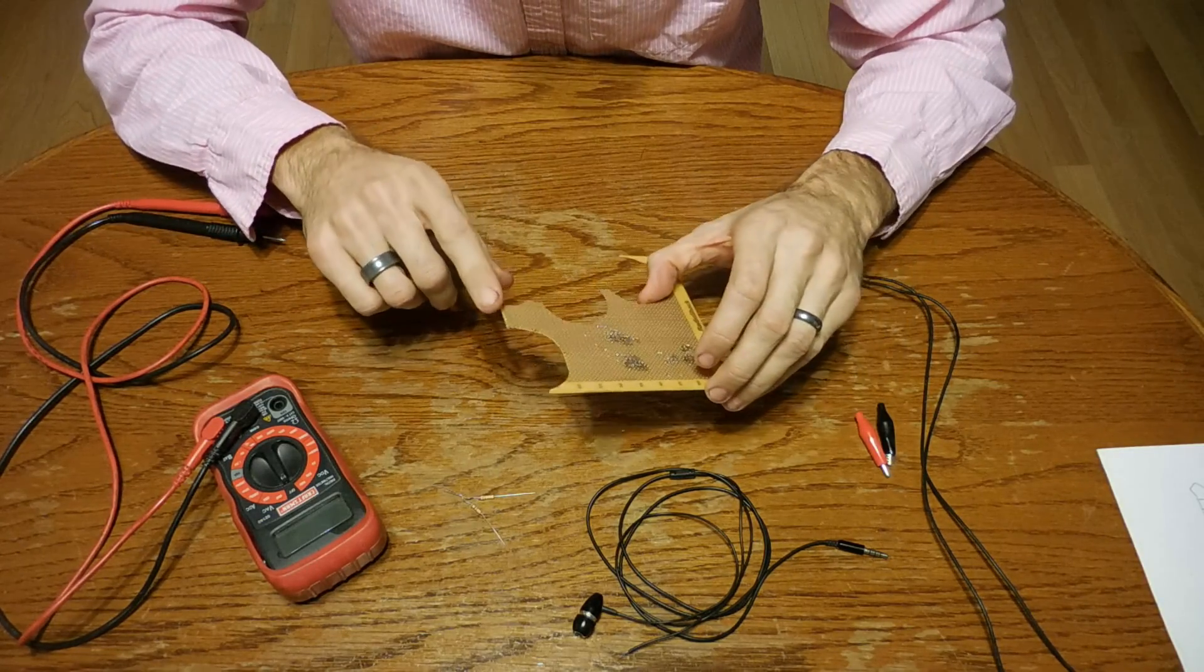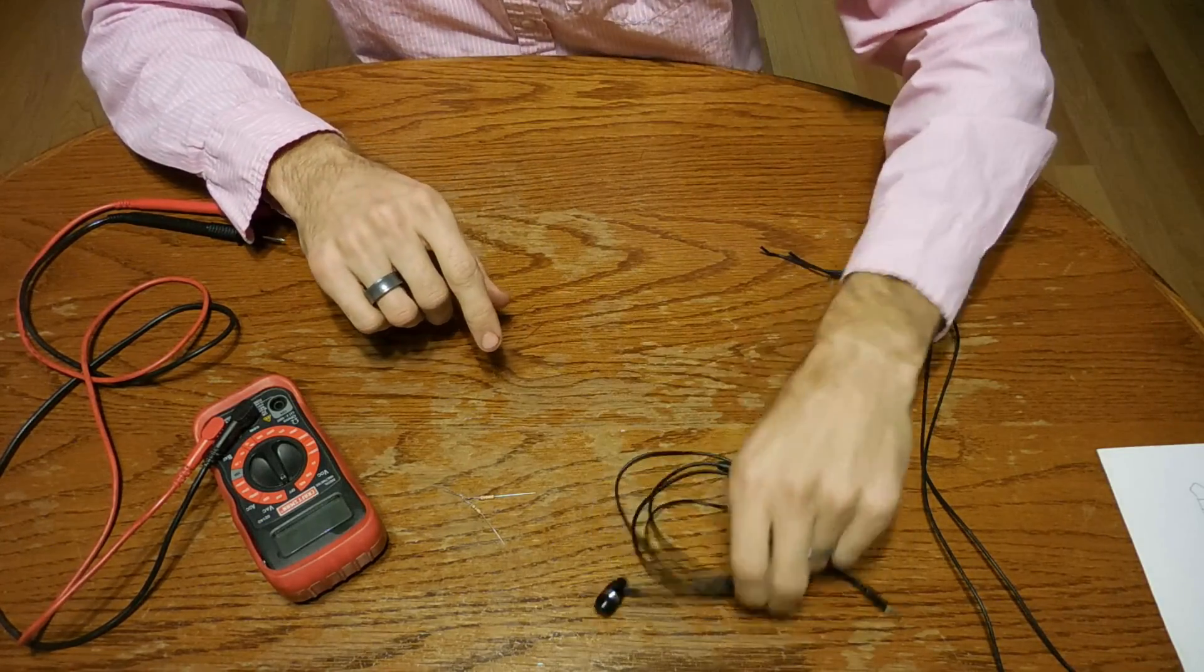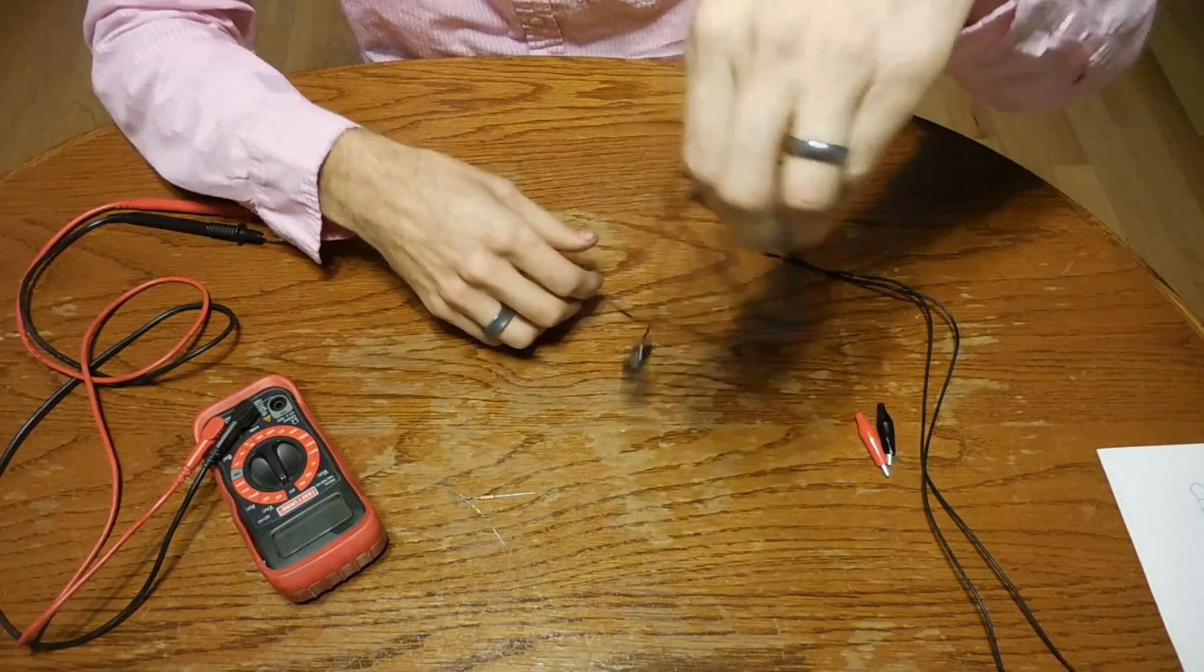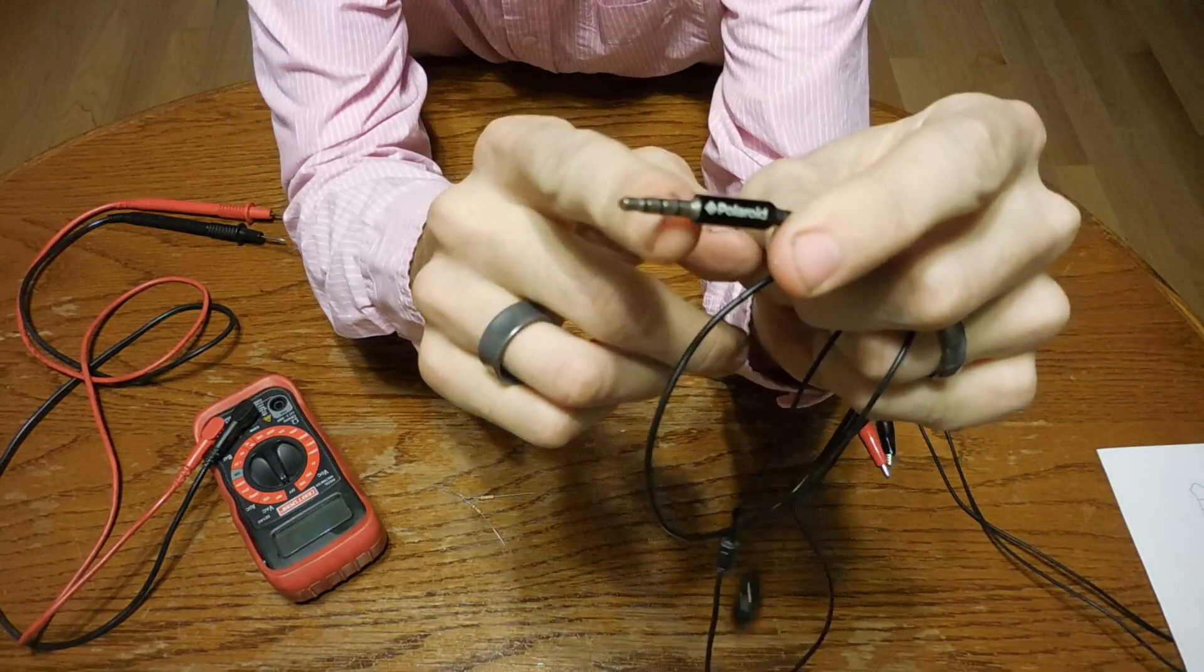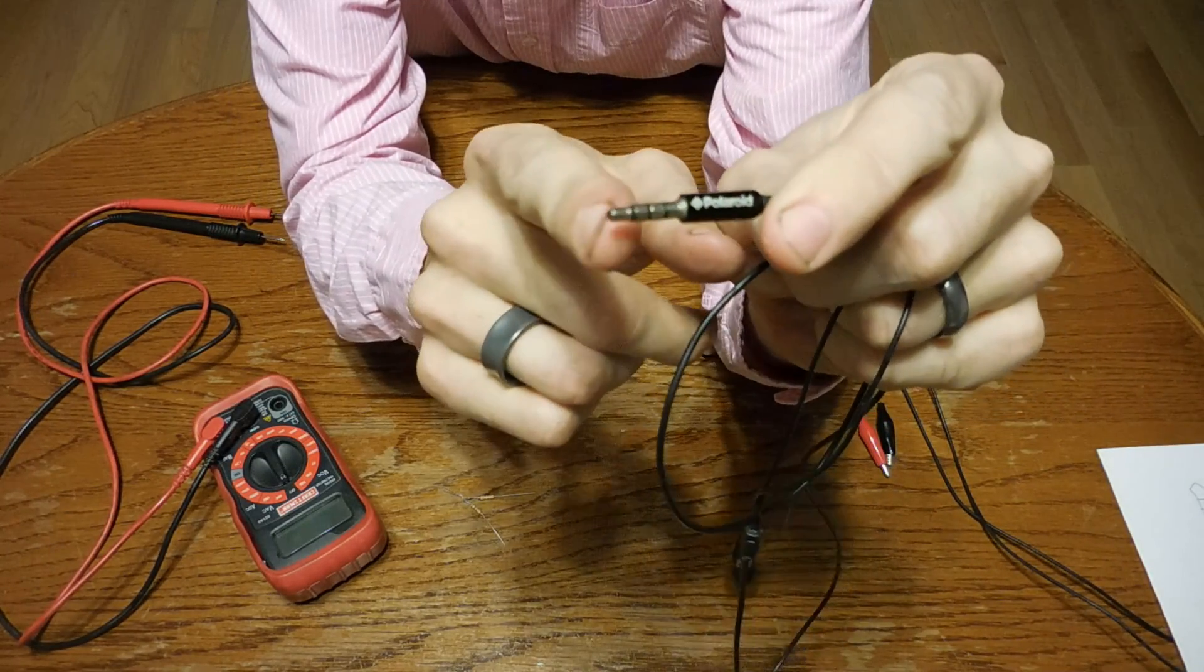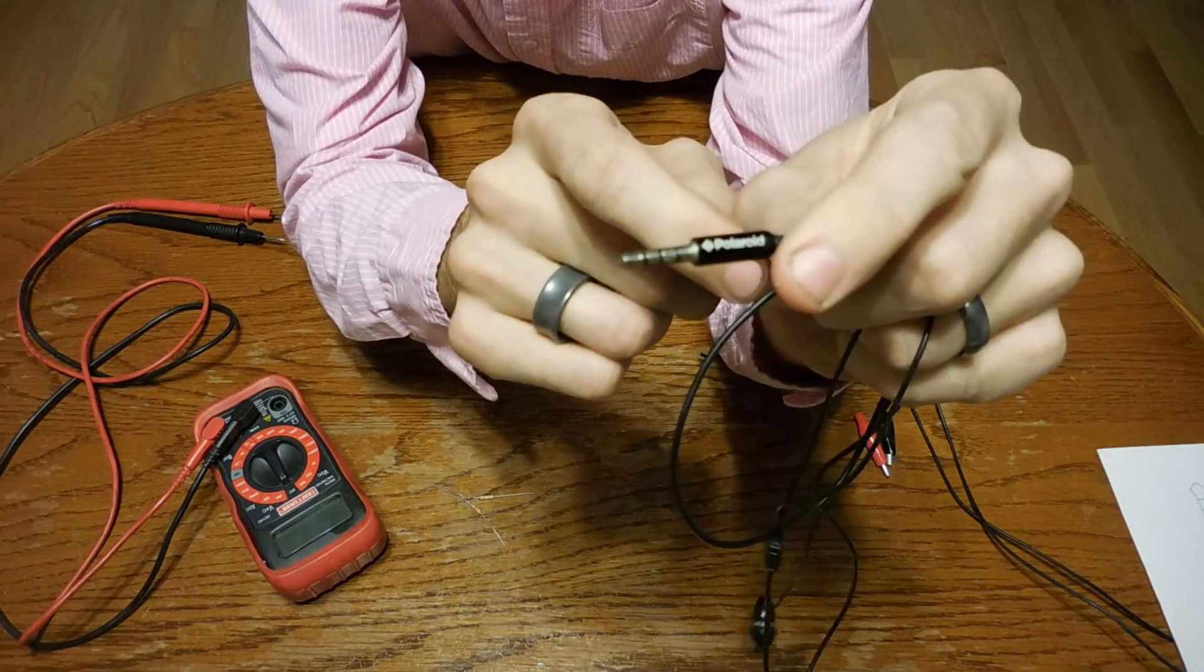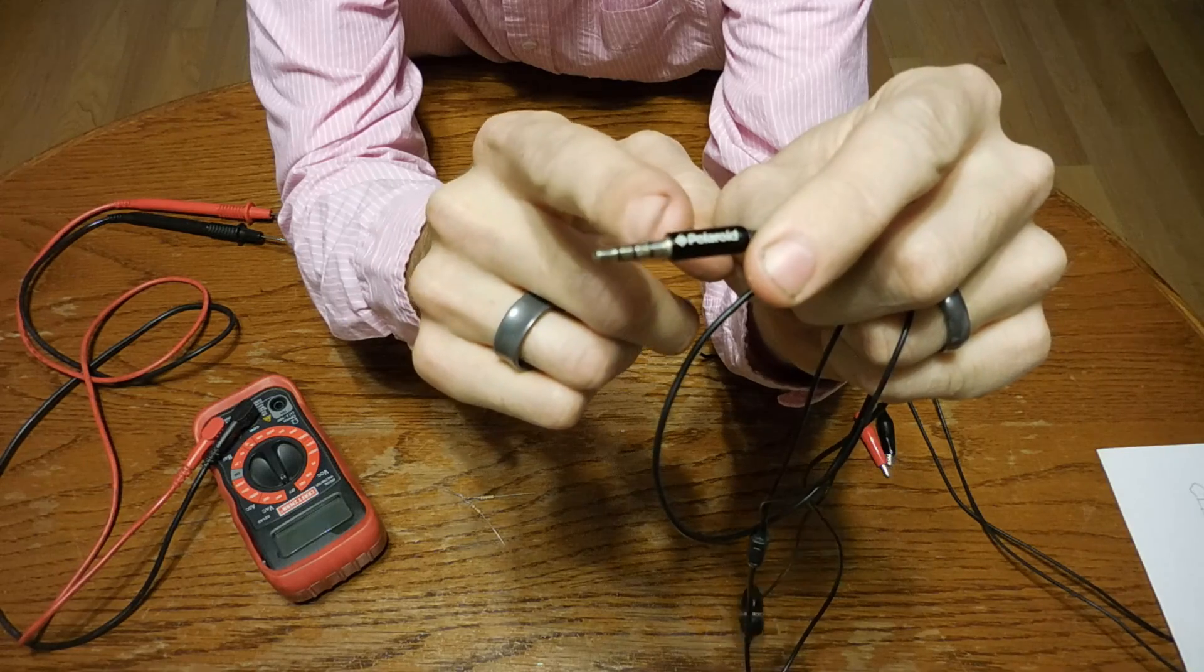You may also need some perfboard. I think I'm going to try to do it without perfboard. You will also need an old pair of headphones, but you'll need one that has the four contacts on it. This is called a TRRS connector, and that stands for tip, ring, ring, sleeve.